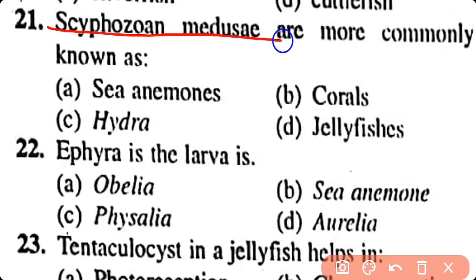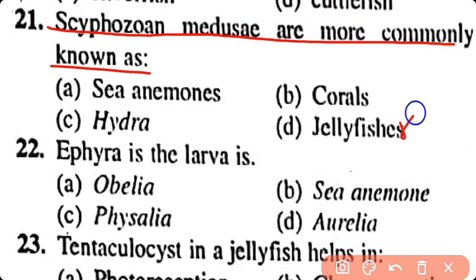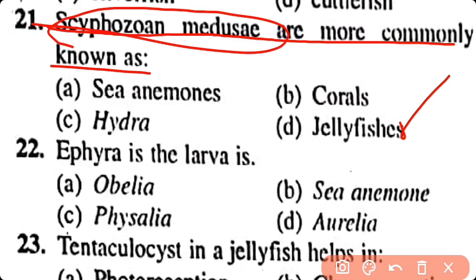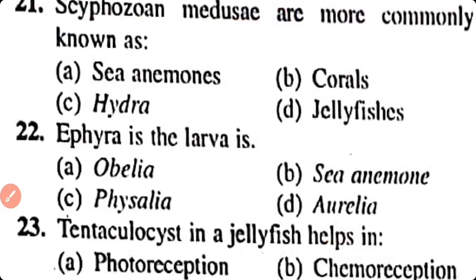Question number 21. Scyphozoan medusae are more commonly known as: sea anemone, corals, hydra, jellyfishes. Correct answer is option D. Scyphozoan medusae are commonly known as jellyfishes.